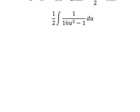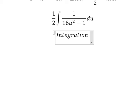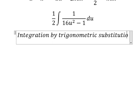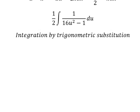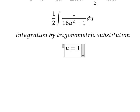Next, we need to use integration by trigonometric substitution. So we need to put u equals 1 over 4 secant of t.